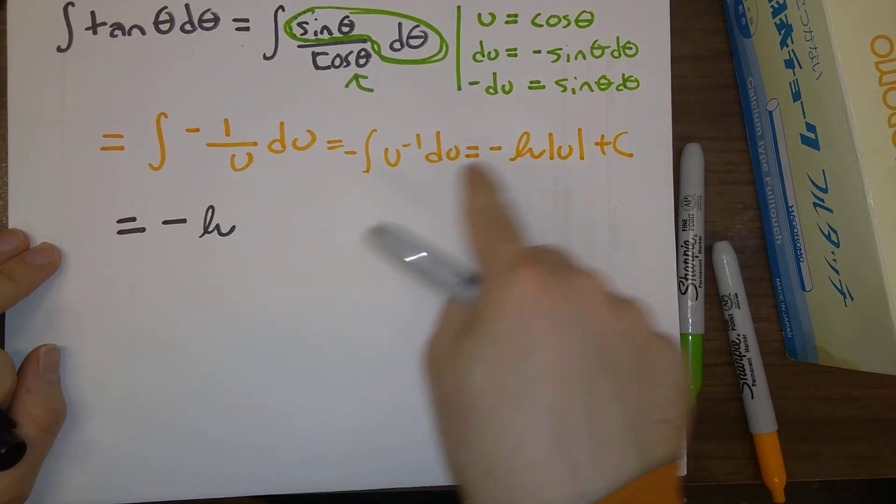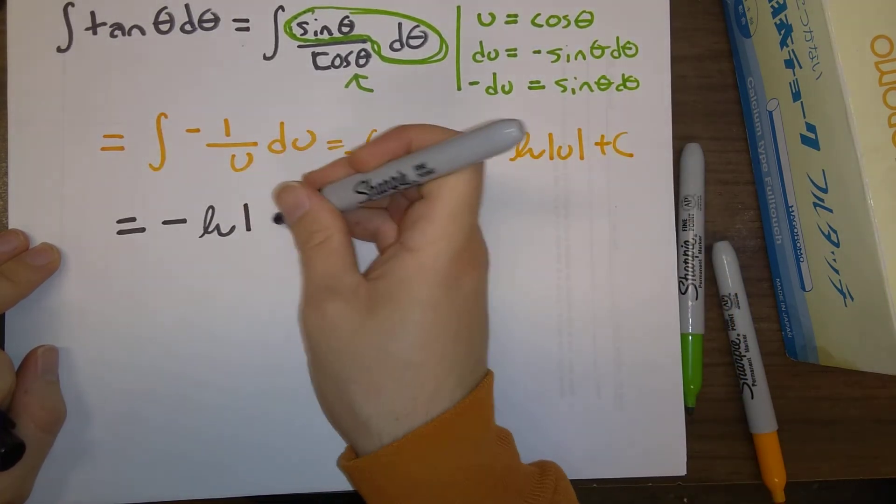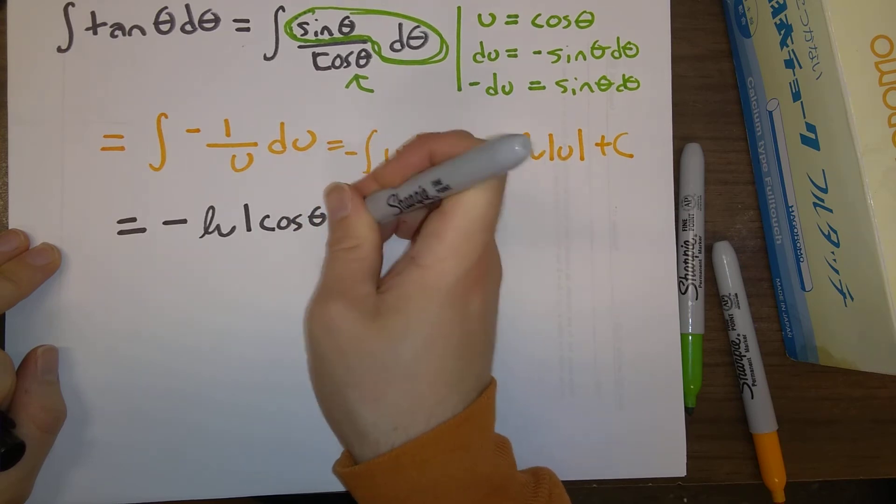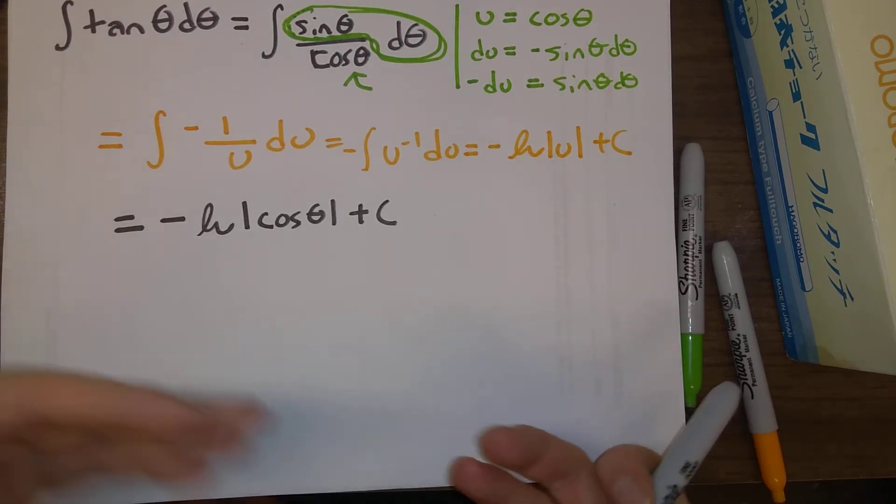So, let's finish this off. Minus log of, plug in, what is u? Cosine of theta. So there is an answer, an alternative method for, right, so this is a perfectly fine final answer.